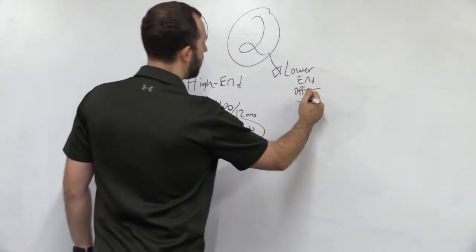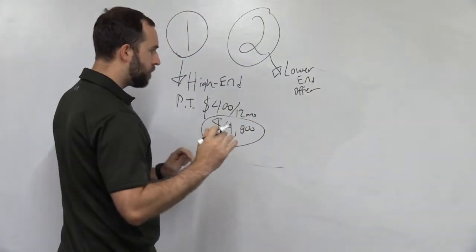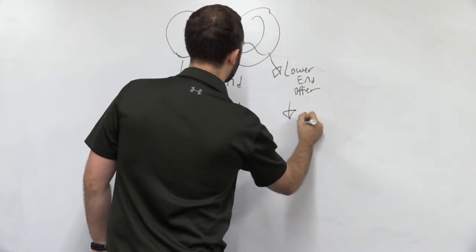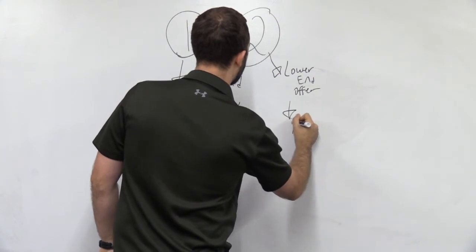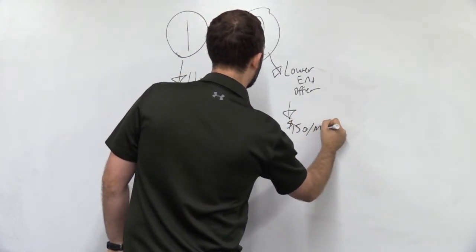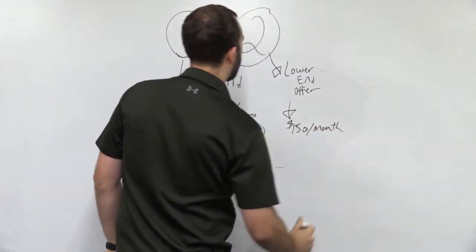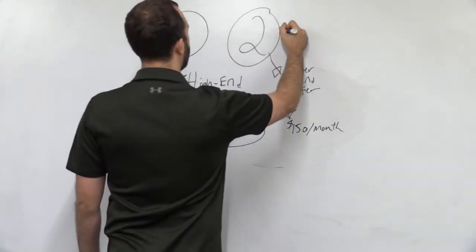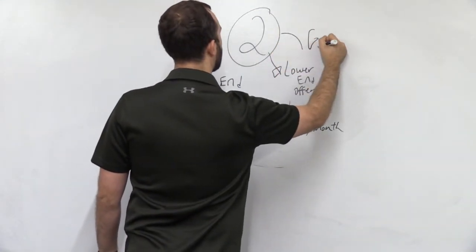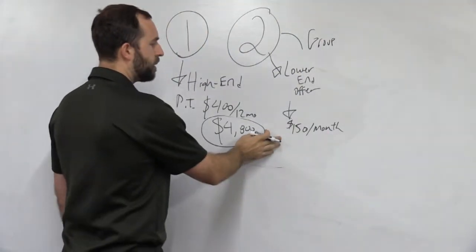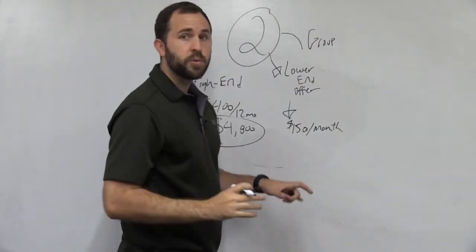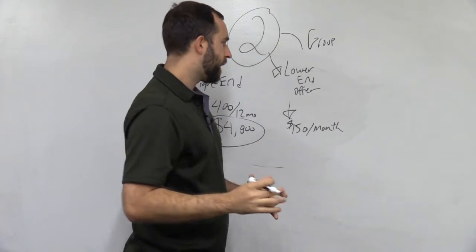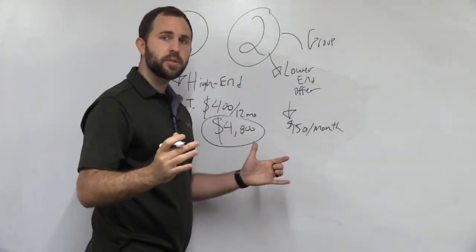And what this could be here, I'm just going to keep the numbers very simple. This could be $150 a month. And this is a group program. Now, you could just set it up to where in order to start your first group, you could have, let's just say it's six players.